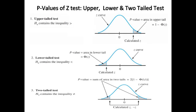Number one is the upper-tailed test, in which the alternative hypothesis contains the inequality sign used for greater than. Number two is the lower-tailed test, in which the alternative hypothesis contains the inequality sign used for less than. Number three is the two-tailed test, in which the alternative hypothesis contains the not-equal sign.